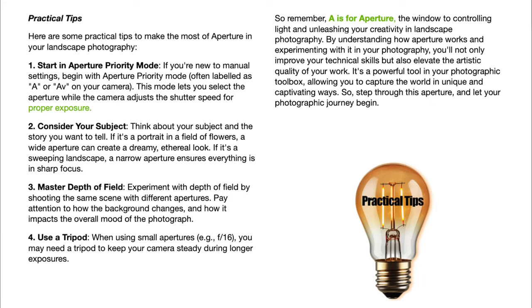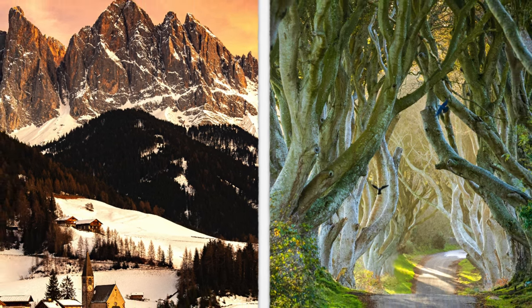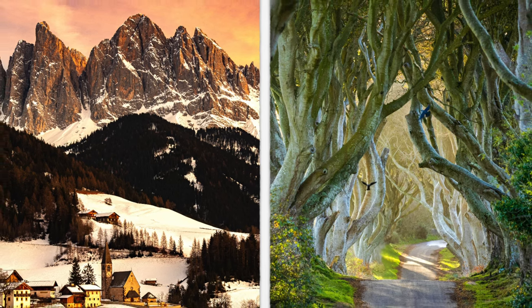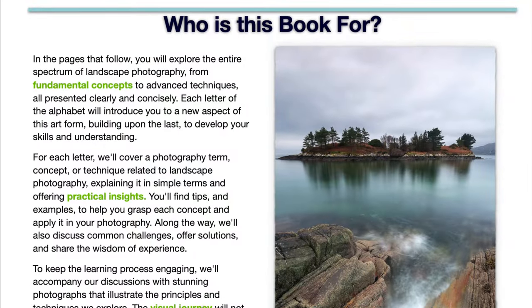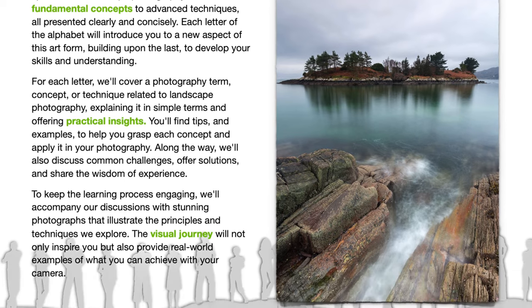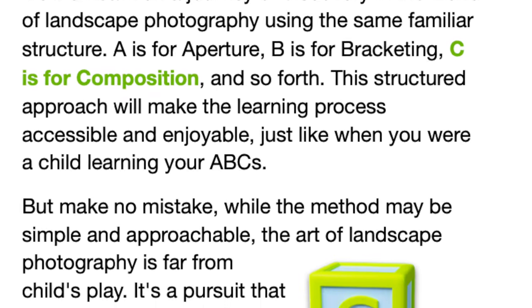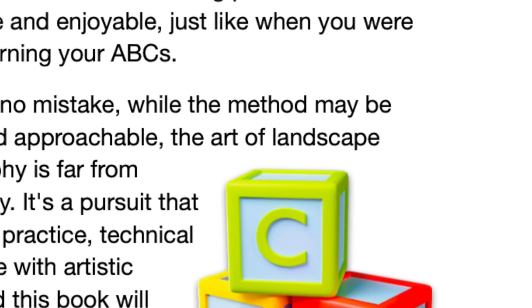I've created something that's not just a book — it's a visual feast. Icons, diagrams, and sample photos bring the concepts to life. It's like having a mentor right there with you, guiding you through the intricate world of landscape photography. This book is for everyone who has ever looked through a lens and wondered about the magic of photography. Whether you're a beginner, intermediate, or someone looking to level up further, A is for aperture, B is for bracketing, C is for composition — and so on. Each chapter is a building block to help you construct your photographic knowledge.